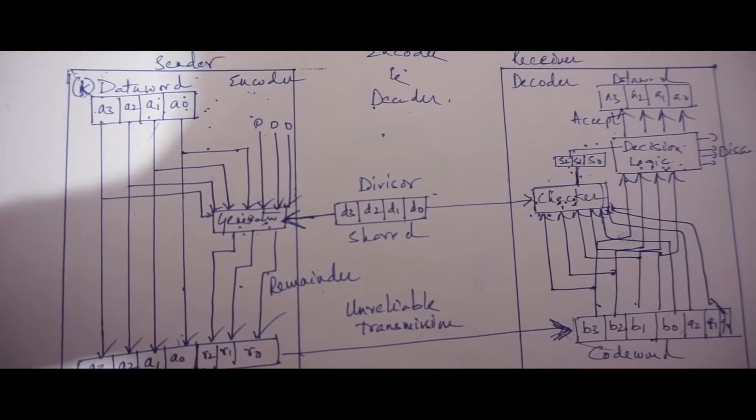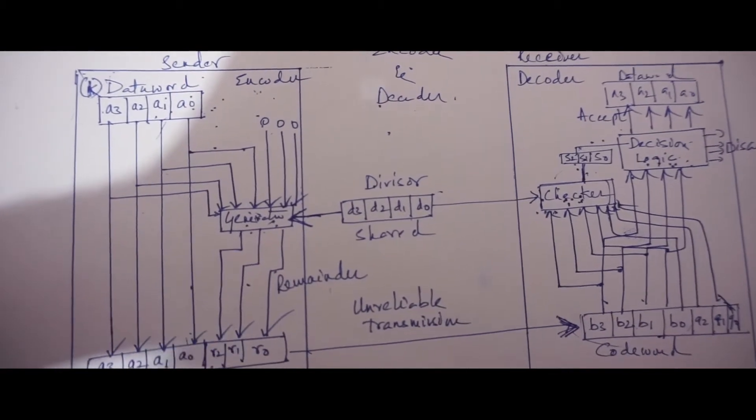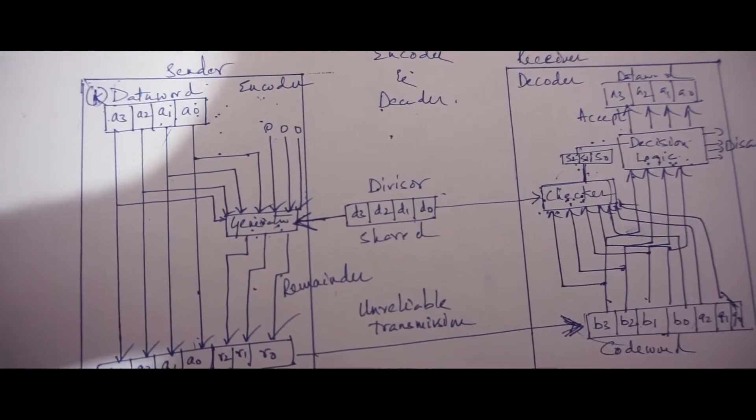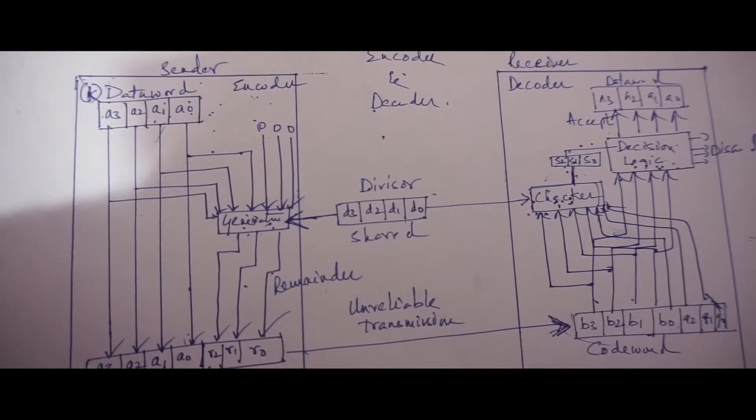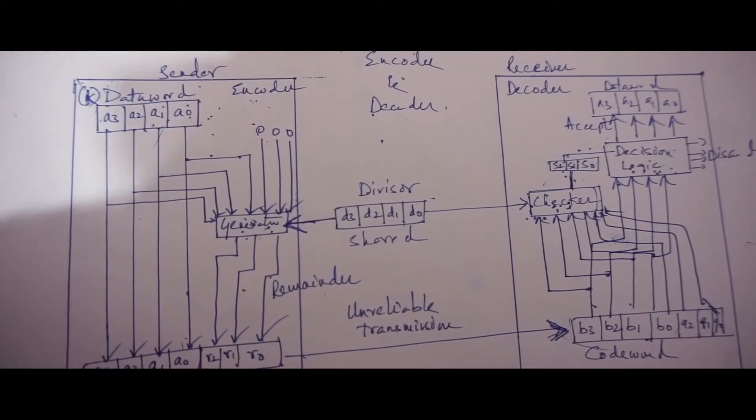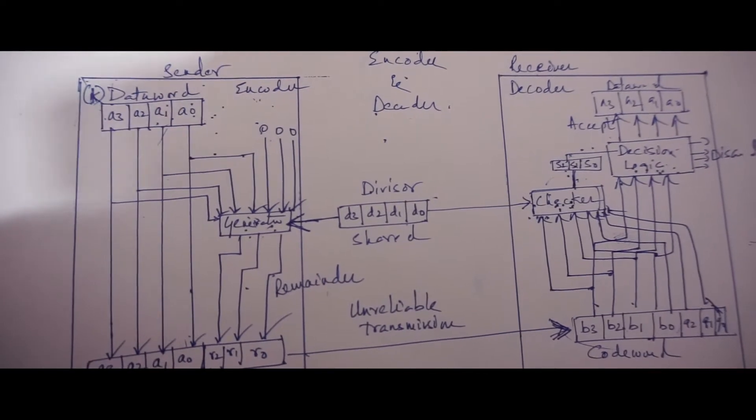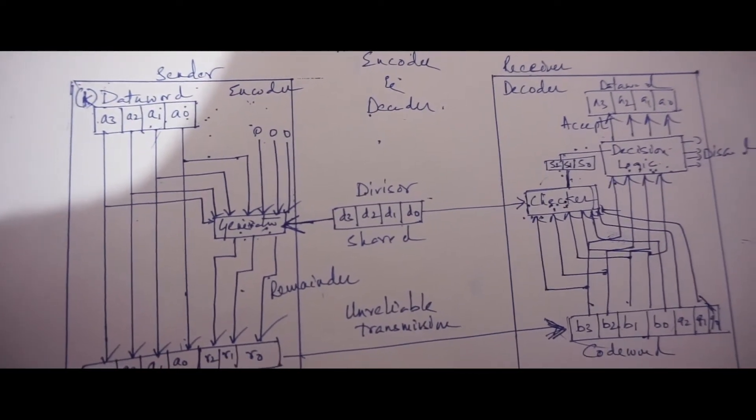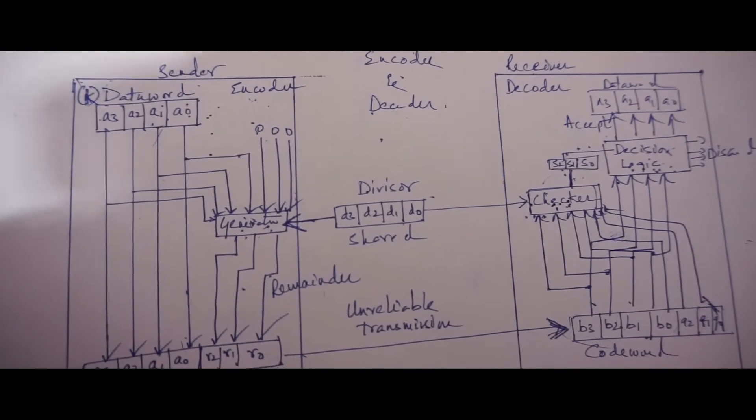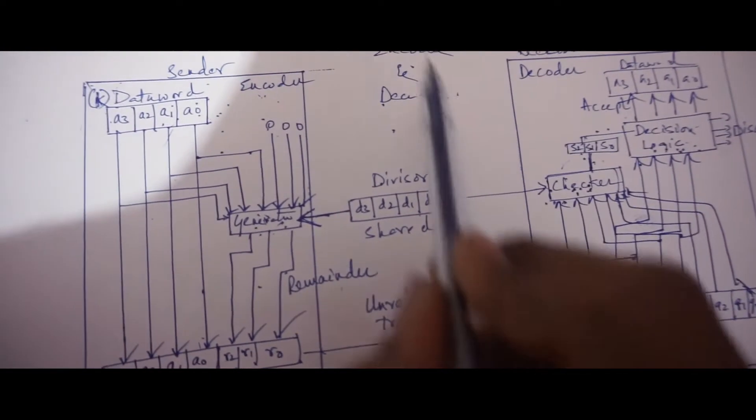Welcome to DB Tutorials. Today we're going to discuss Cyclic Redundancy Check, that is CRC. So what is CRC? CRC is a subset of cyclic codes that is used in networks such as LANs and MANs. And why do we use cyclic codes? We use cyclic codes to correct errors.